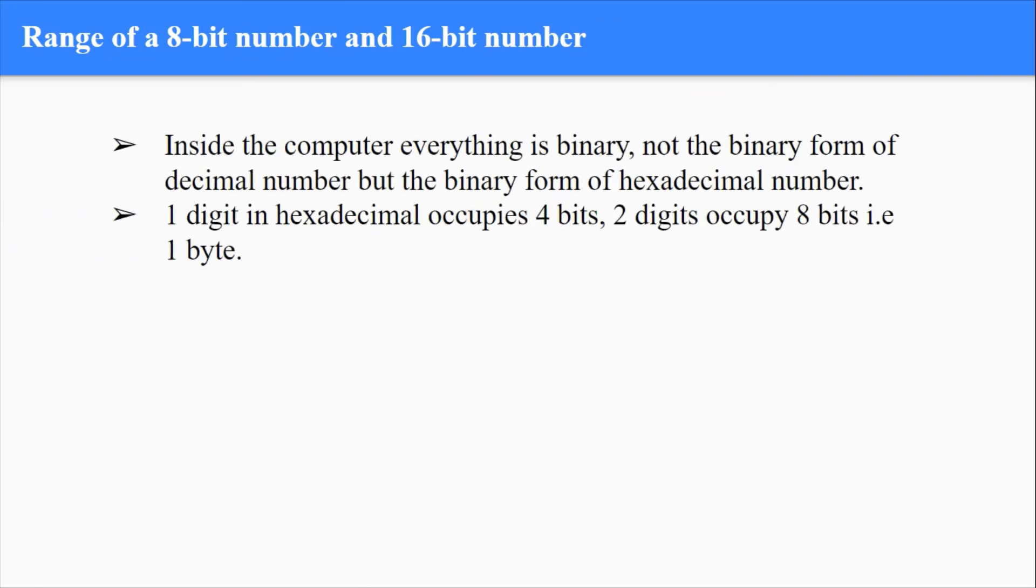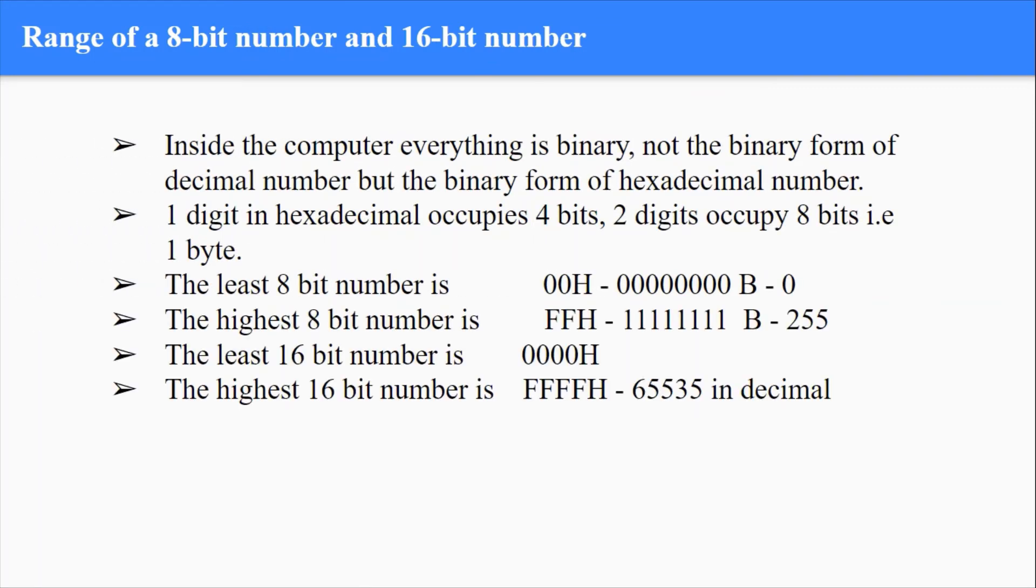So what is the range of an 8-bit and a 16-bit number? Inside the computer, everything is binary, not the binary form of decimal number but the binary form of hexadecimal number. I hope you are thorough with this one statement alone. One digit in hexadecimal occupies 4 bits, two digits occupy 8 bits, that is 1 byte. So what is the least 8-bit number or a 1 byte number that I can represent in hexadecimal? That is 00h is the least possible number, and the highest number will be FFh, turning all the 8 bits on, that is 11111111, and its decimal conversion is 255.